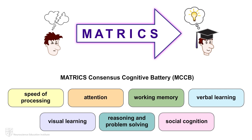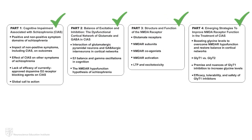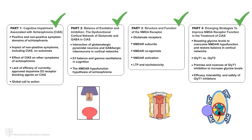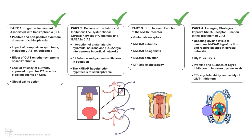To summarize what we have learned in this four-part Mechanism of Action animation series: GlyT1 inhibition leads to increased glycine in the cortex, which then binds as a coagonist at NR1 subunits on hypofunctional NMDAR on PV-plus GABAergic interneurons in the cortical network, allowing for increased stimulation of PV-plus GABAergic interneurons by glutamate coming from glutamatergic pyramidal neurons, restoring the EI balance and synchronizing the firing of glutamatergic pyramidal cells in the cortical network, potentially leading to improvements in cognitive impairment associated with schizophrenia.